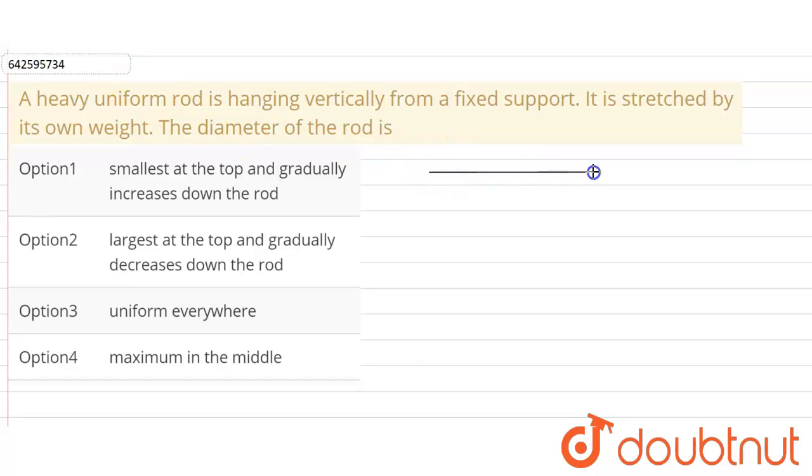A heavy uniform rod is hanging vertically from a fixed support. It is stretched by its own weight. The diameter of the rod is... okay, so we have to tell what will happen to the diameter of the rod. Our given options are: smallest at the top and gradually increases down the rod; largest at the top and gradually decreases down the rod; uniform everywhere; and maximum in the middle.